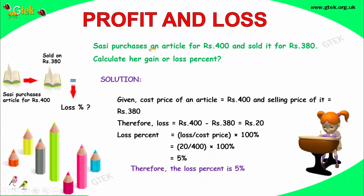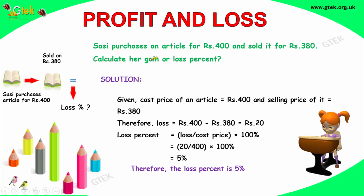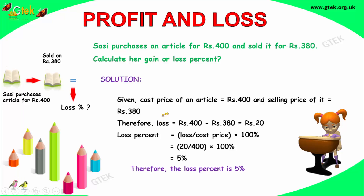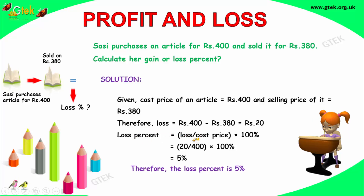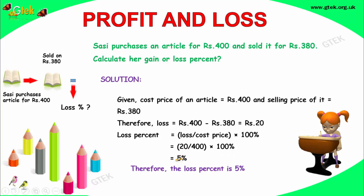Sassy purchases an article for rupees 400 and sold it for rupees 380 — calculate the gain or loss percentage. Since the purchase price is 400 and sold for 380, it's a loss. The loss is 400 minus 380, equal to 20. The loss percentage is 20 divided by the cost price 400 into 100, which gives 5 percent.